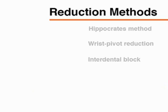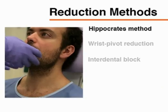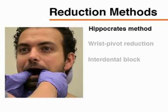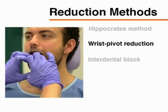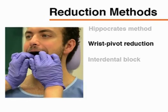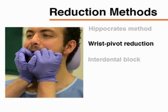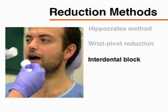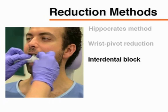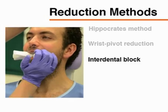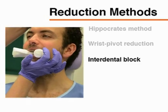This video will demonstrate a simple technique for TMJ reduction. Other techniques include the classic so-called Hippocrates method, the wrist pivot reduction, and the use of an interdental object or block in order to lift the condyle back into place, and are not discussed further in this video.